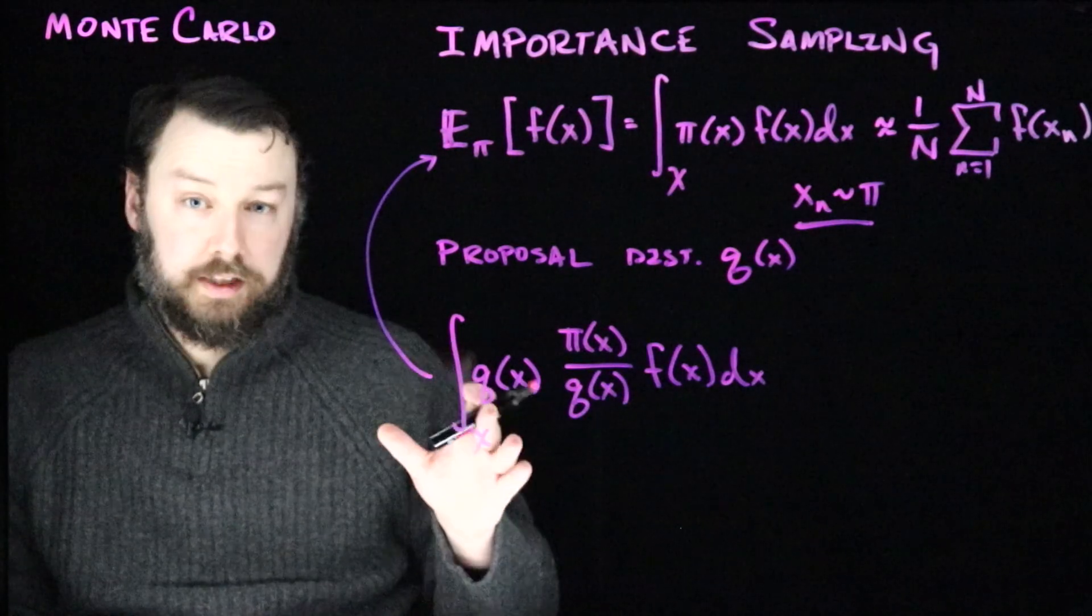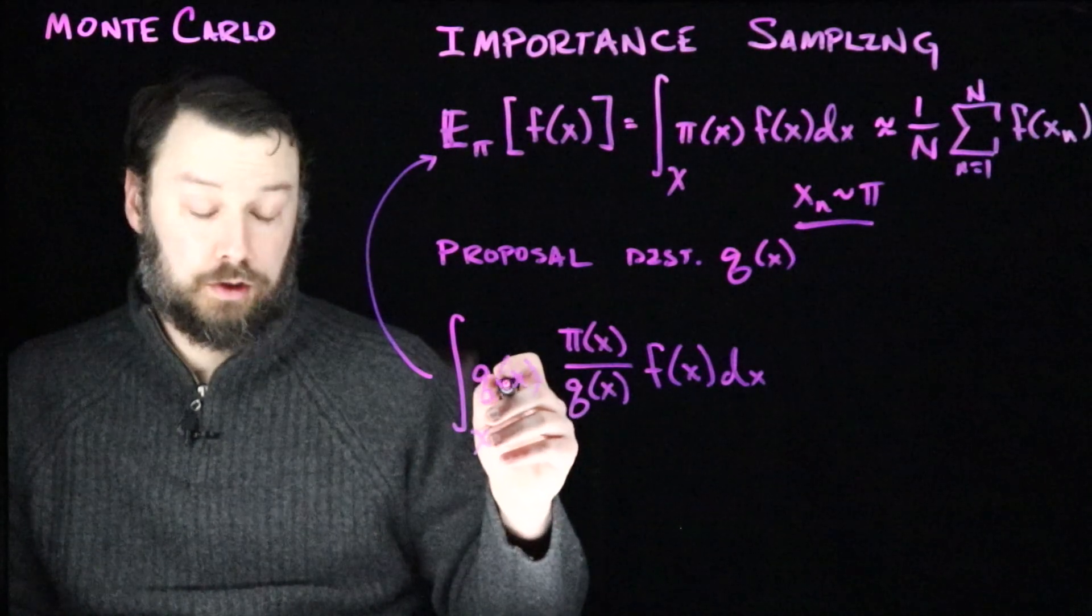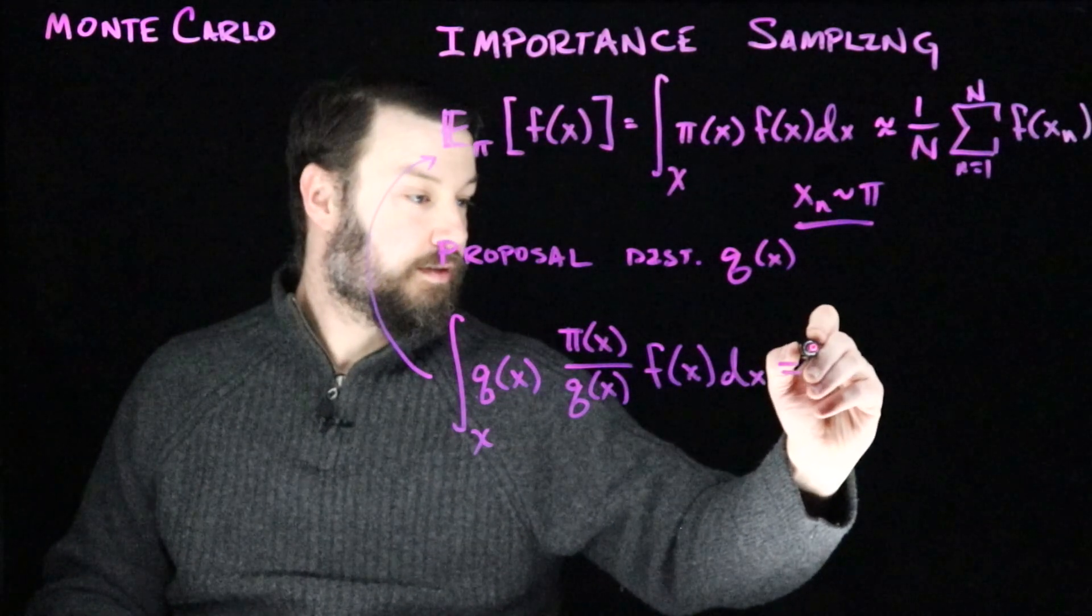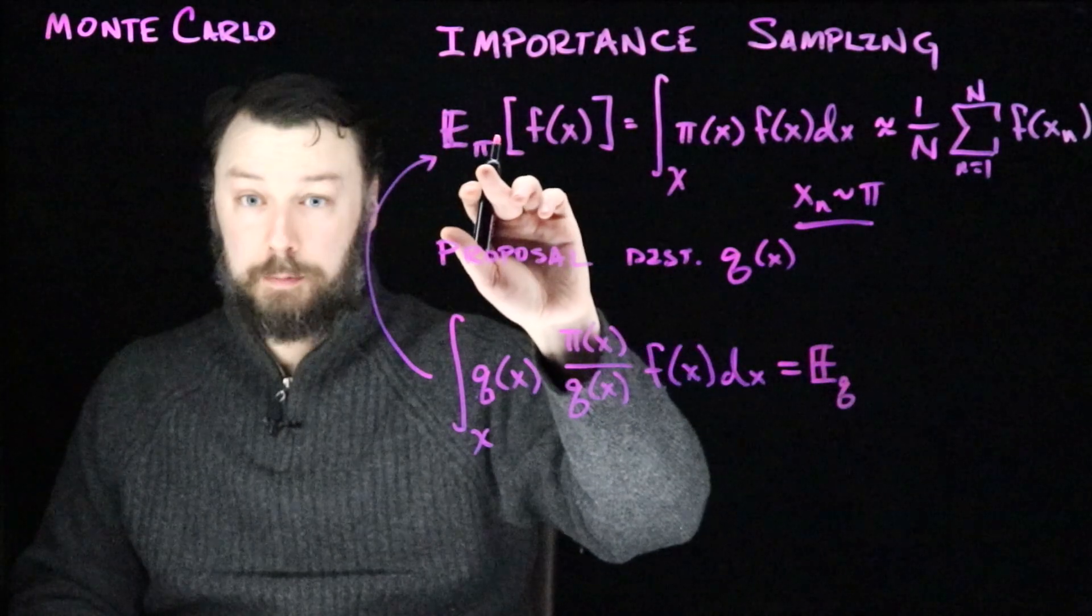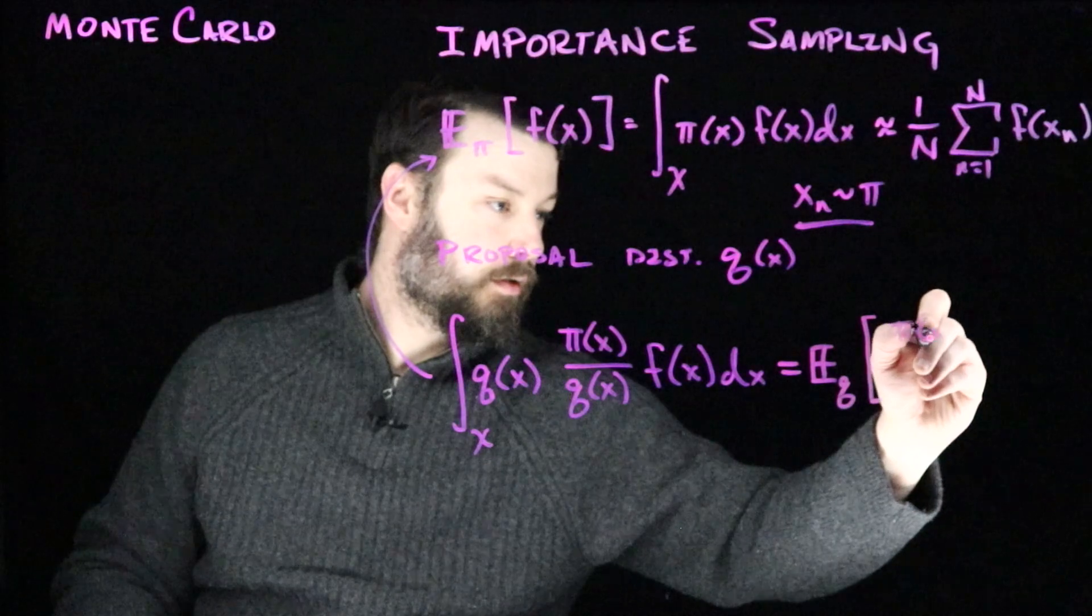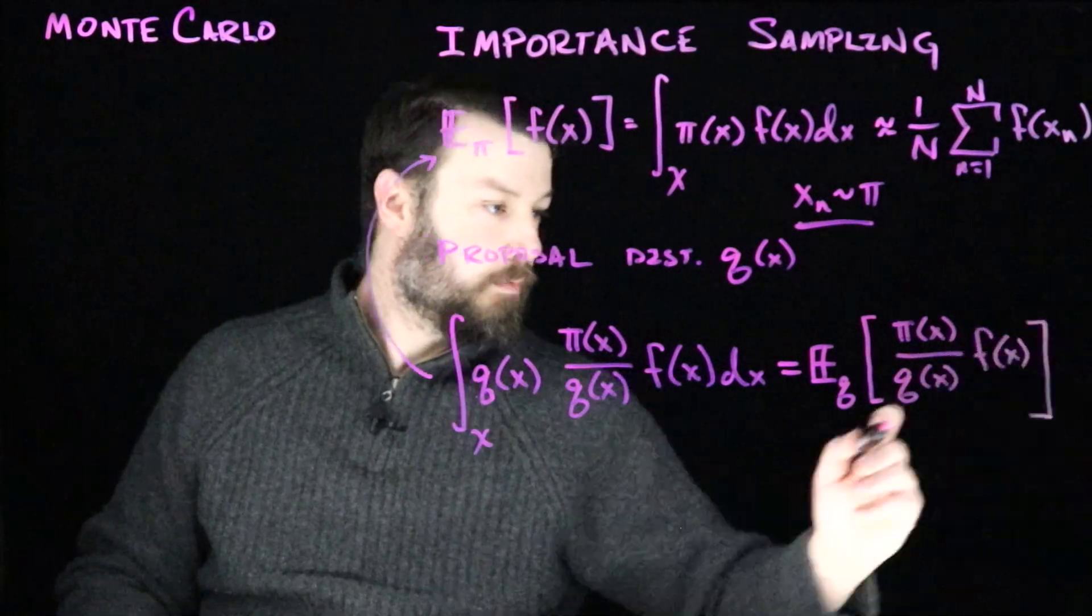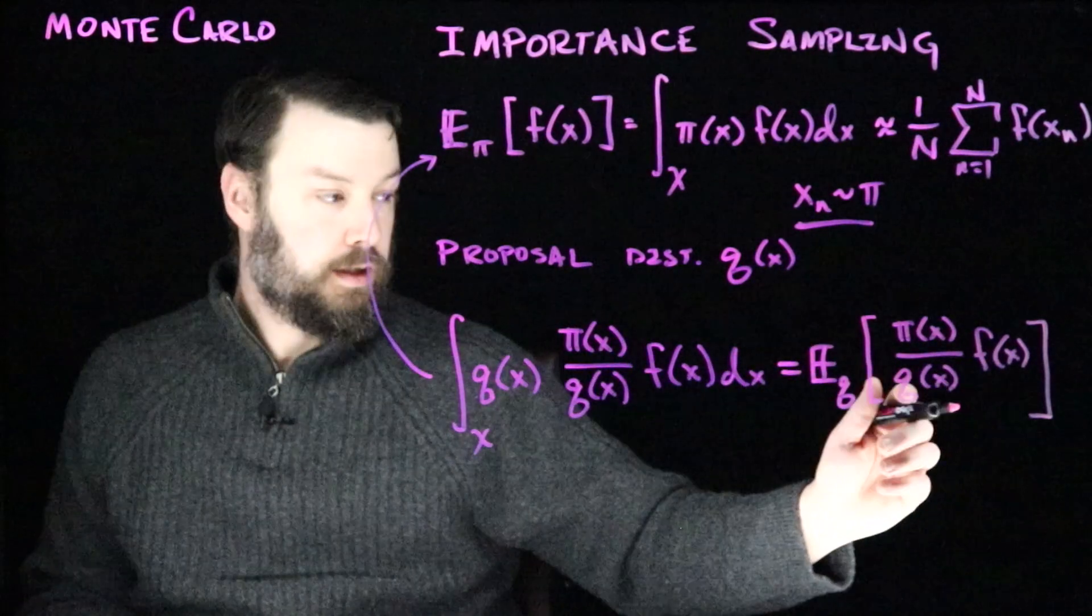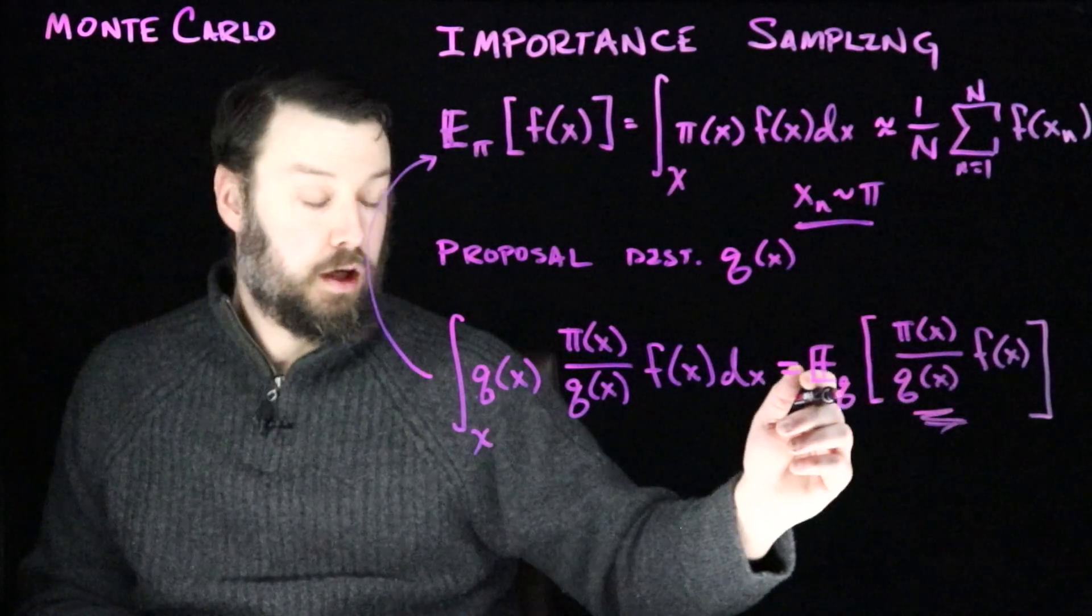And as long as q isn't zero in a place where the original integrand isn't zero, then this is a thing we feel like we can get away with. What's interesting about this is that we've now rewritten this as a different expectation, that is an expectation under q now, of a different function. That is to say that we can write it like this. I'm going to write an expectation under q instead of pi, of the quantity pi of x divided by q of x. So rather than an expectation under pi of f, instead we have a different function that has this extra bit out in front, and we're computing the expectation of that function under q.